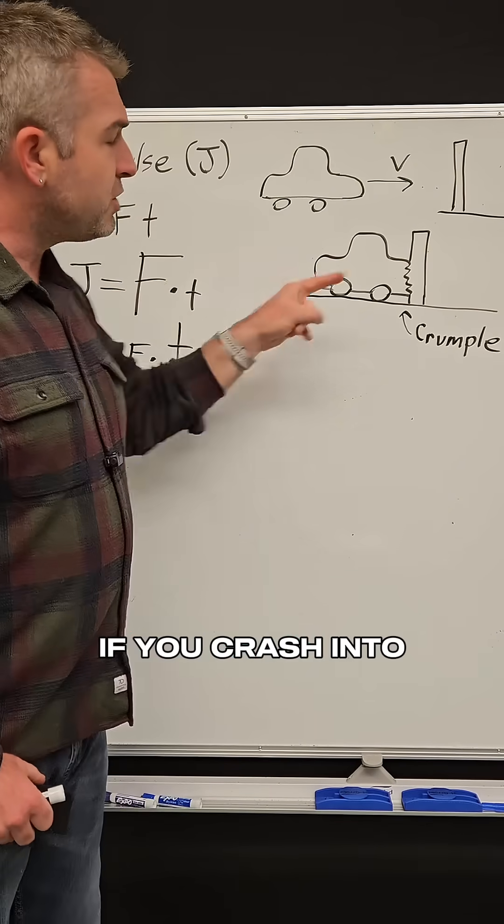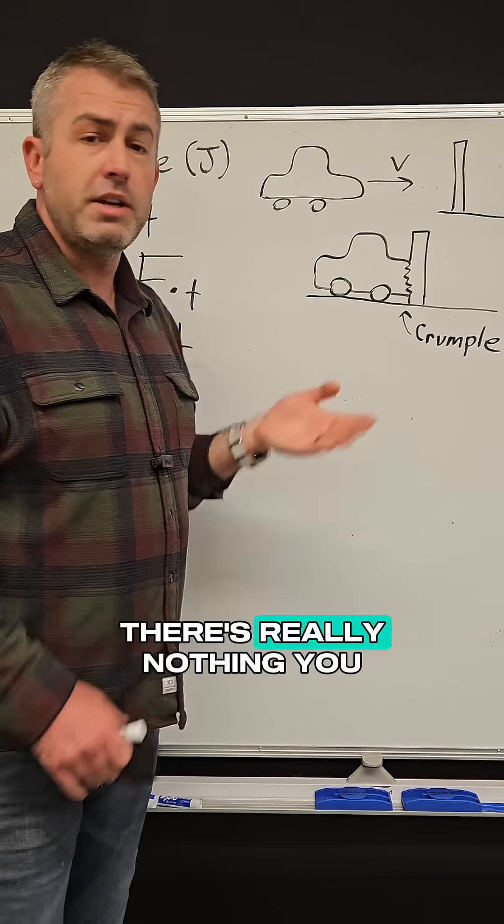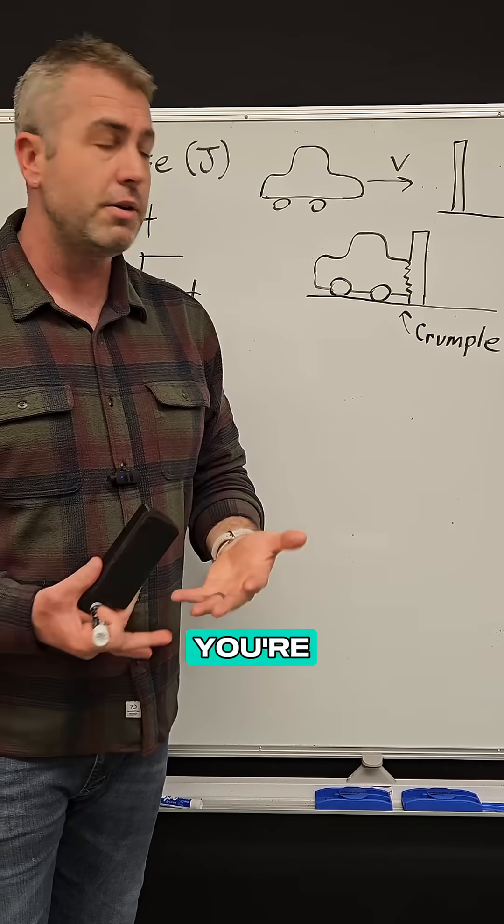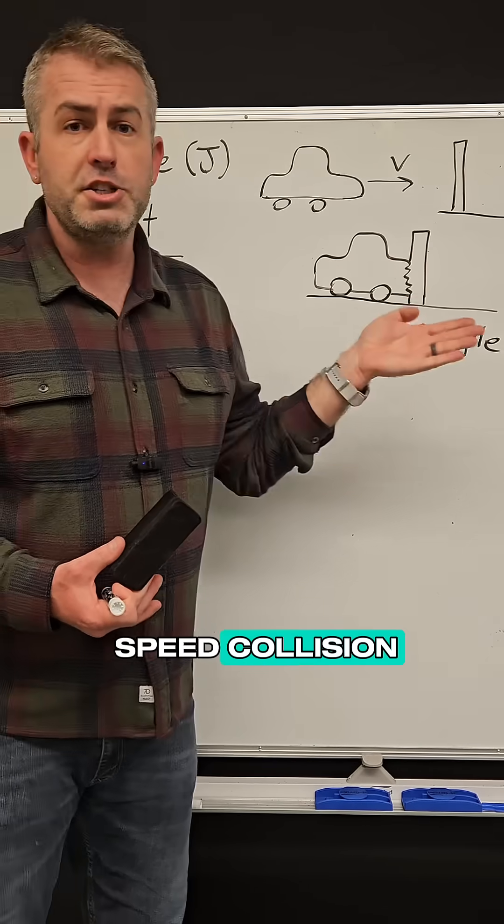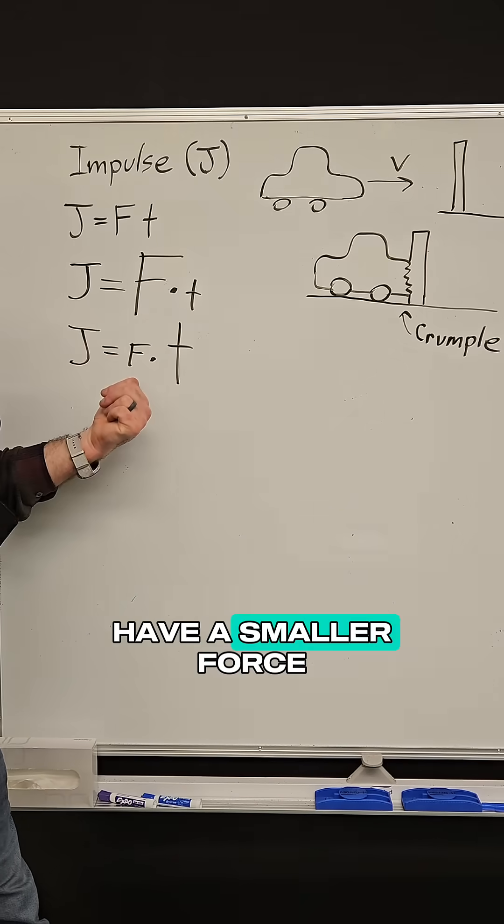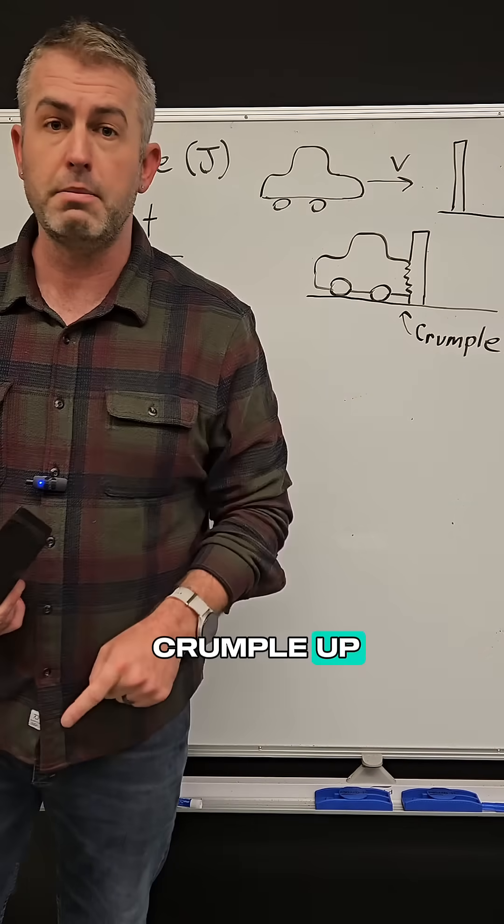Now of course, if you crash into a wall at 30, 40, 50, 60 miles per hour, there's really nothing you can do. You have way too much momentum when you hit that wall. But for a lower speed collision, it is better to have a smaller force for a longer period of time and let that bumper crumple up.